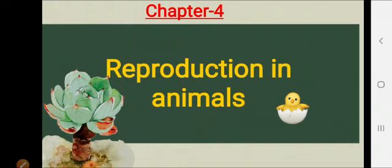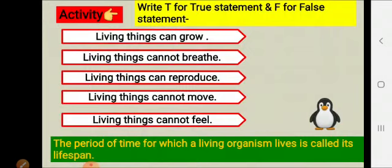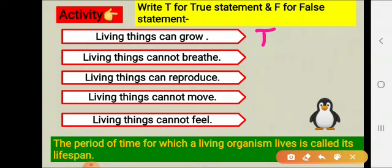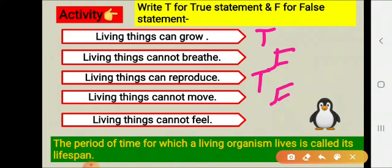Children, you have already learned about living and non-living things. Some examples of living things are plants, animals, and human beings. Here is an activity — find out whether the characteristics of living things are true or false. Living things can grow — true. Living things cannot breathe — false, living things can breathe. Living things can reproduce — true. Living things cannot move — false. Living things cannot feel — false, living things can feel.